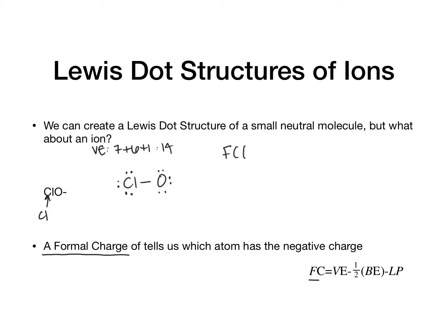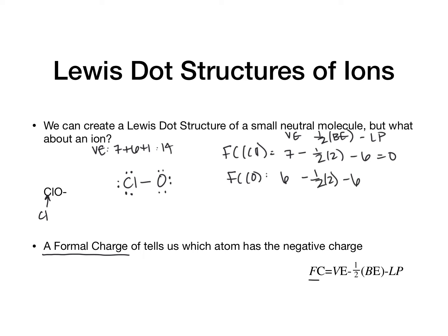The formal charge for chlorine is: valence electrons seven, minus half of the bonding electrons (which is half of two), minus the lone pair electrons, which are six. So seven minus one minus six equals zero — the chlorine is neutral. The formal charge of oxygen is six minus half of two minus six, which equals negative one. Therefore, the charge on oxygen is negative, and we annotate that by drawing a minus sign in a circle.